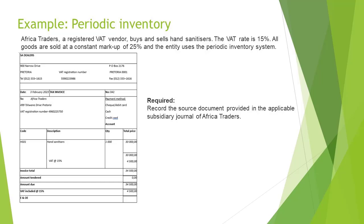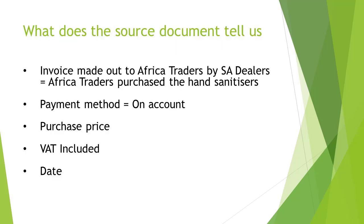Africa Traders, a registered VAT vendor, buys and sells hand sanitizers. The VAT rate is 15%. All goods are sold at a constant markup of 25% and the entity uses the periodic inventory system. You are provided with an invoice that was received from the supplier when the inventory was purchased, and we are required to record the information from the source document in the applicable subsidiary journal of Africa Traders. What does the source document tell us?